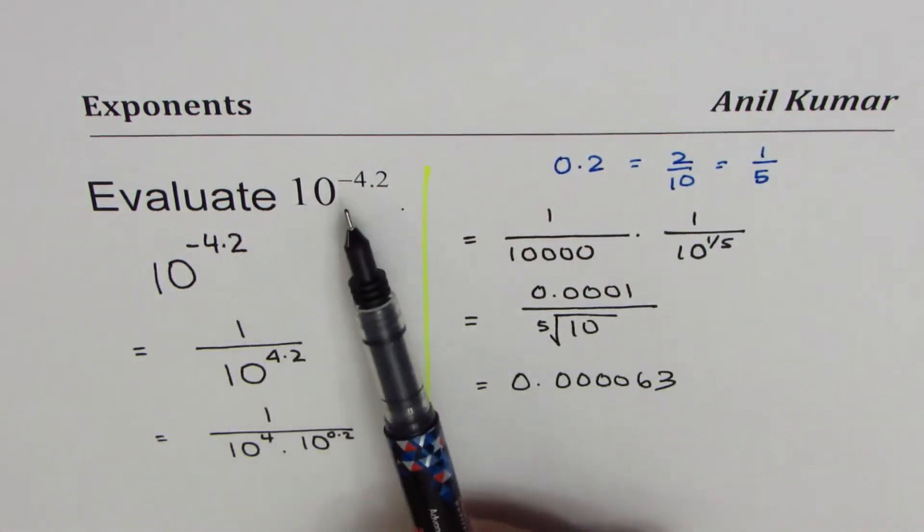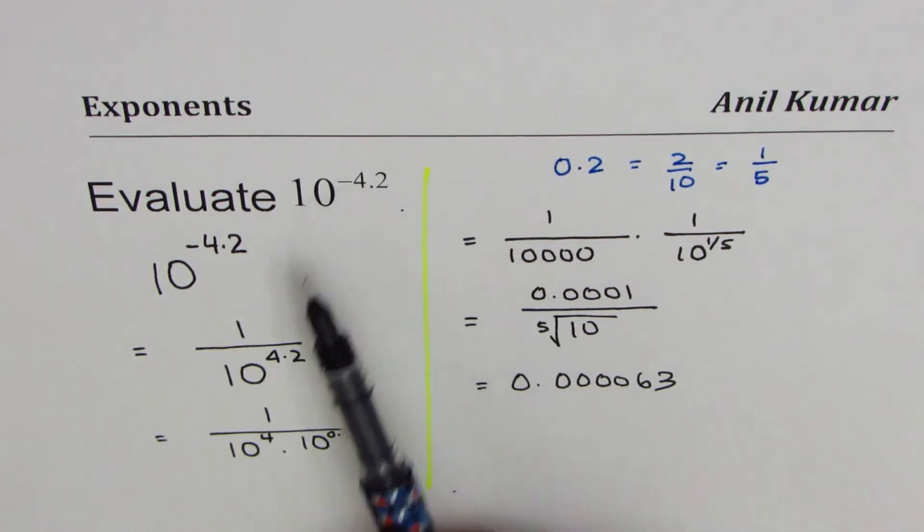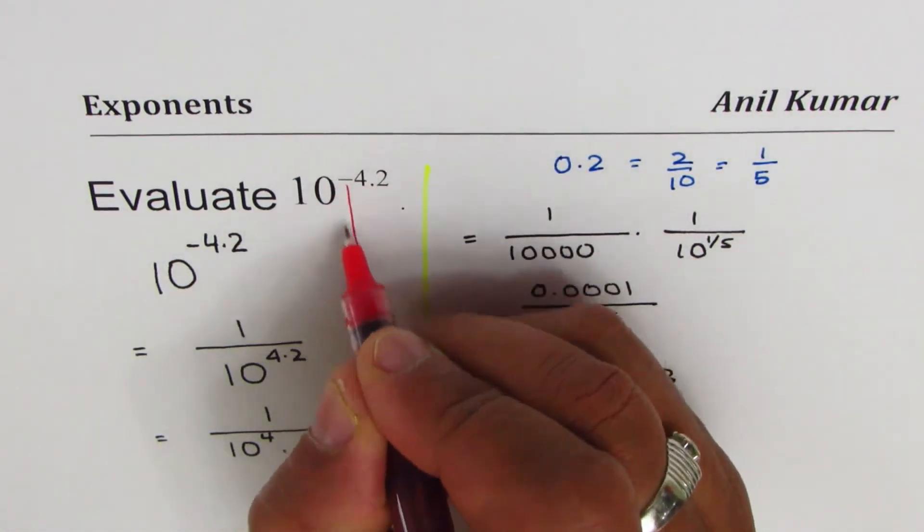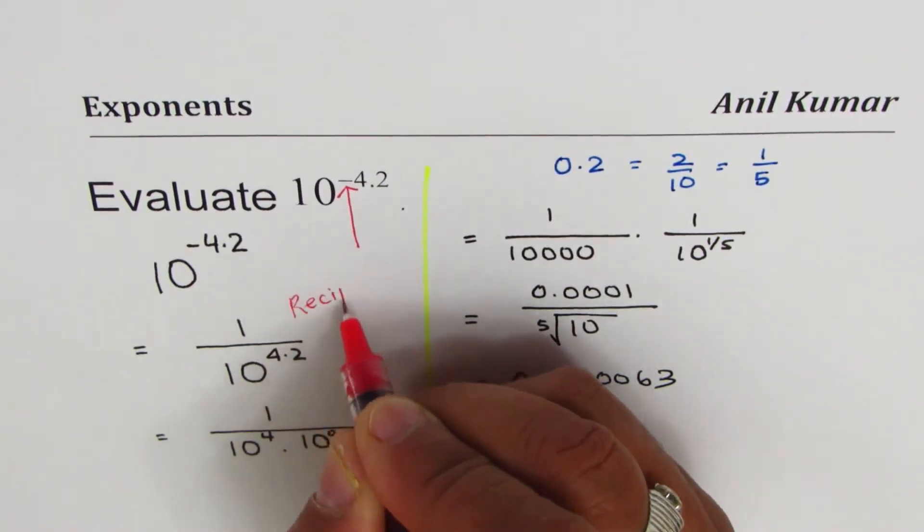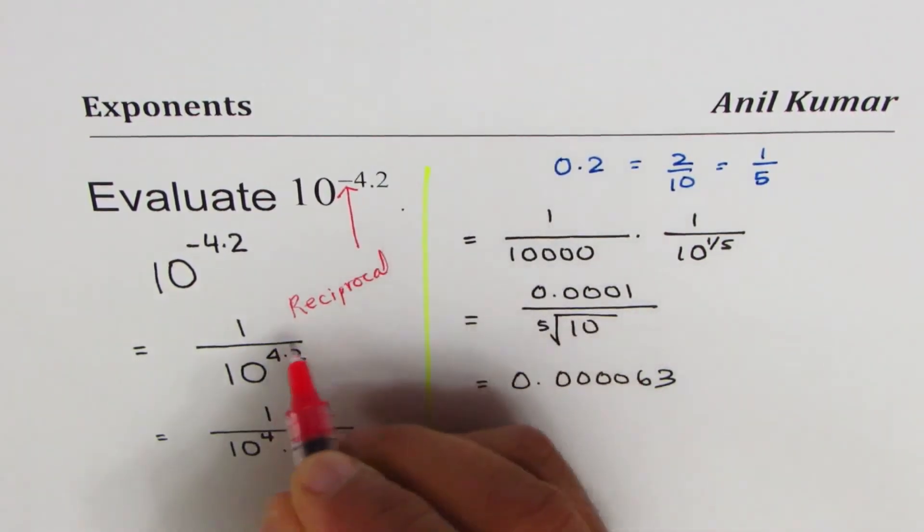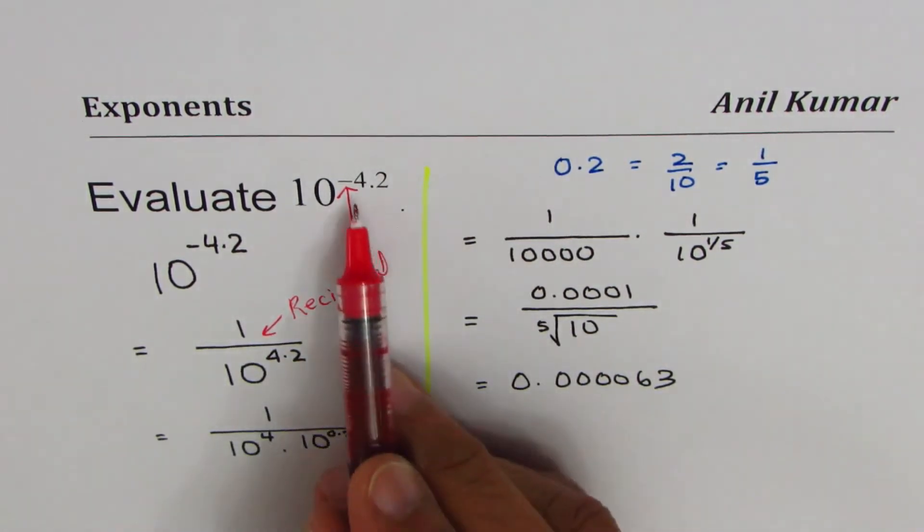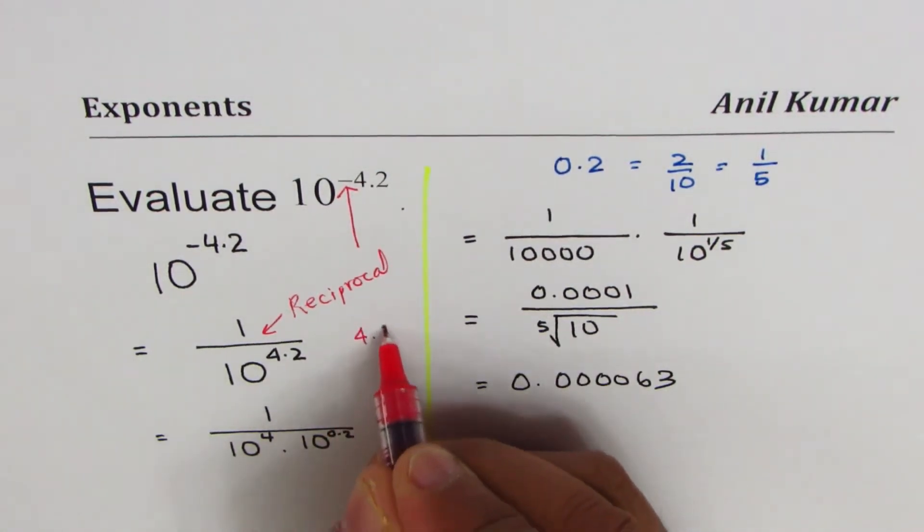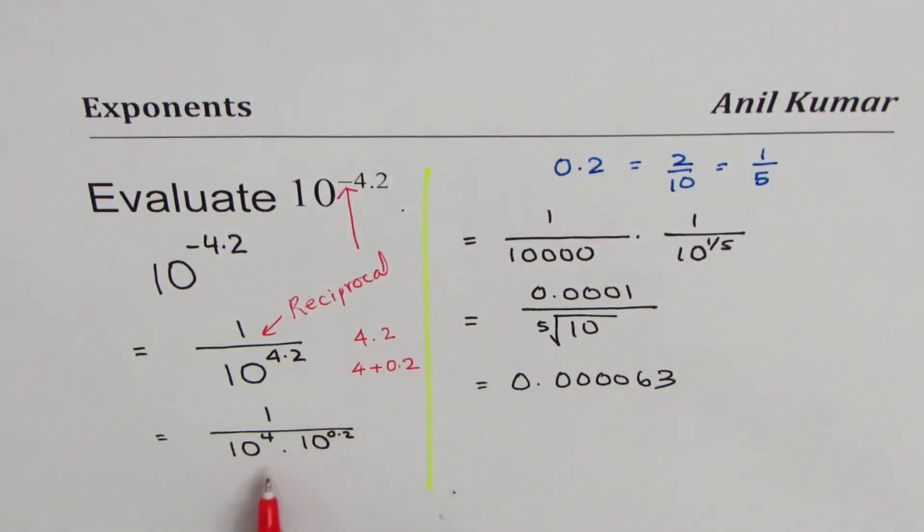Negative means reciprocal, correct? So first step is look into this part which makes it reciprocal. This is what we did here. Then 4.2 - that means 4.2 could be written as 4 plus 0.2. Plus means product, that is why we multiply.